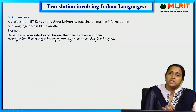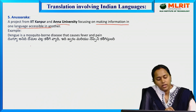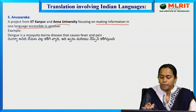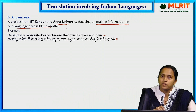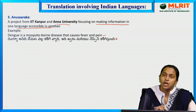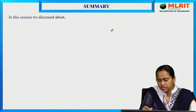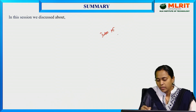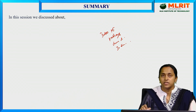The last tool is Anusaaraka — a product from IIT Kanpur, focusing on making information in one language accessible in another. For example, 'Dengue is a mosquito-borne disease that causes fever and pain' is translated into Telugu. In today's session we discussed the introduction to machine translation, the different types of problems faced in machine translation, and the characteristics of Indian languages. In the next video, we will discuss machine translation approaches, including rule-based approaches. Thank you.